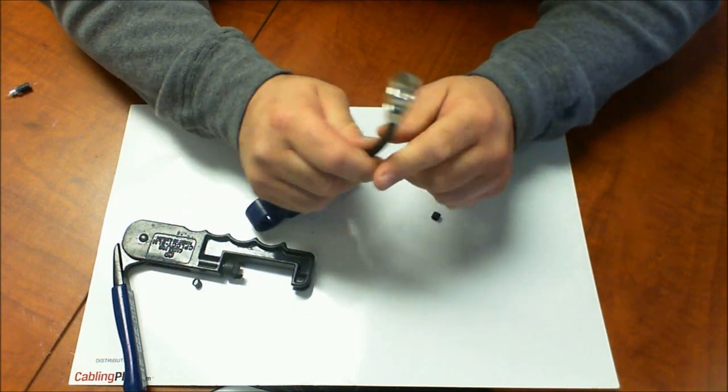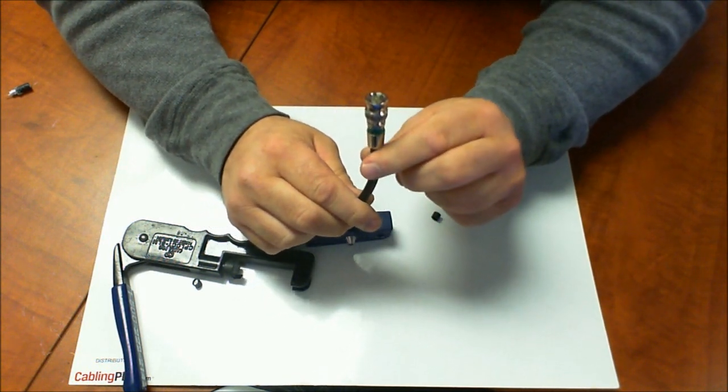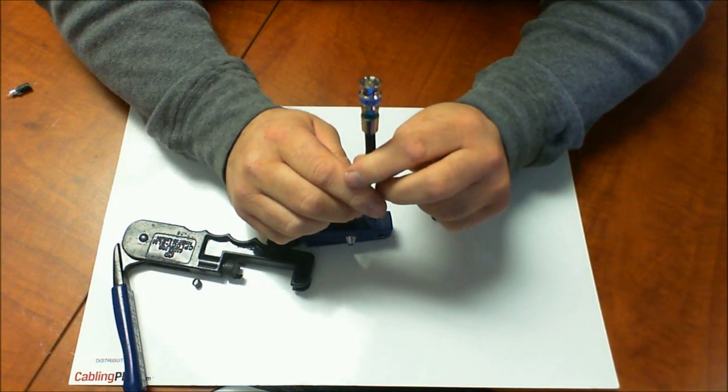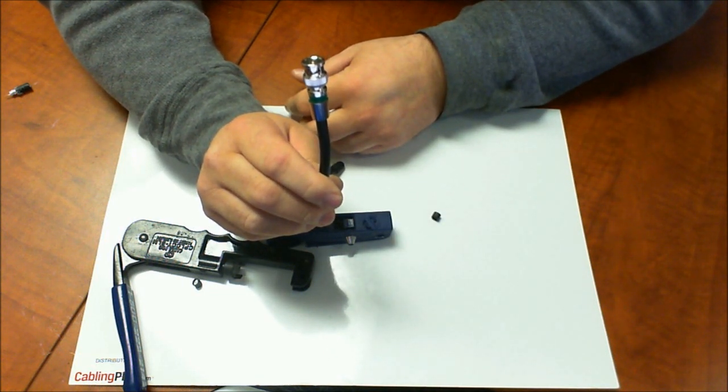I hope this is helpful. Again, this is the FS6 BNCU, a universal compression BNC connector for RG6 and RG6 quad shield. Hope the best in all your installations. Have a great day.